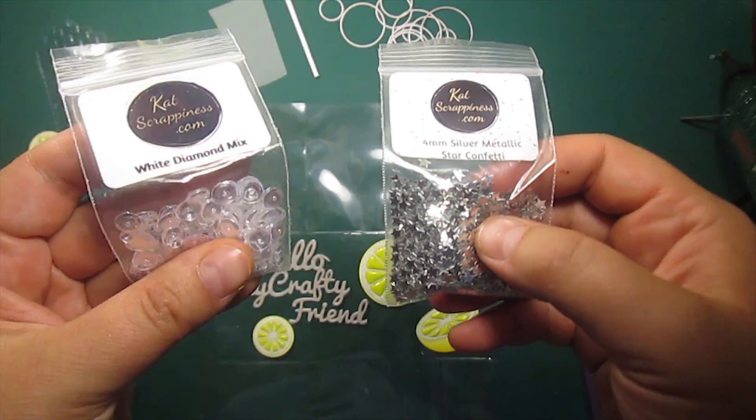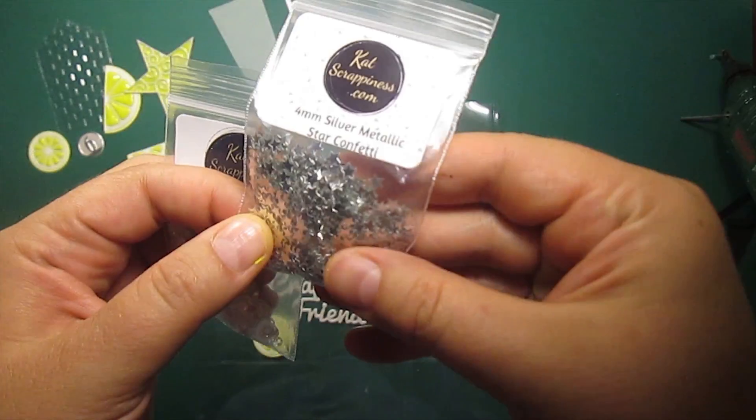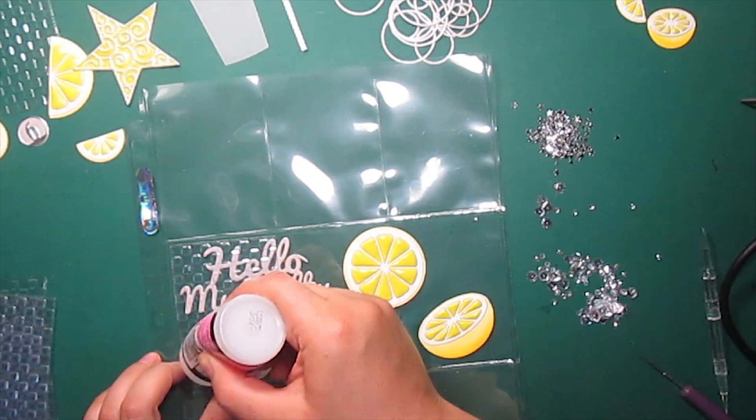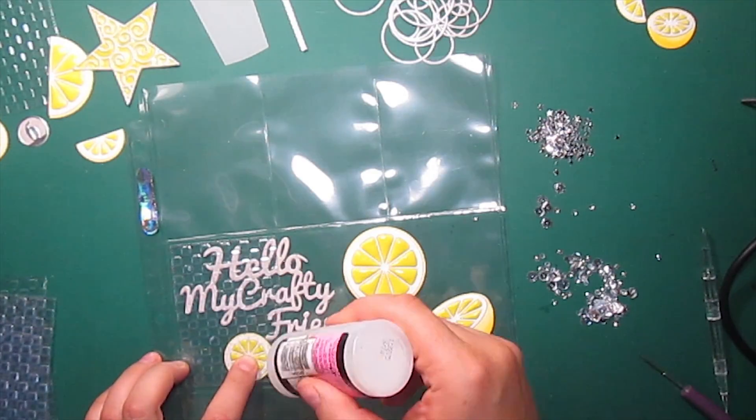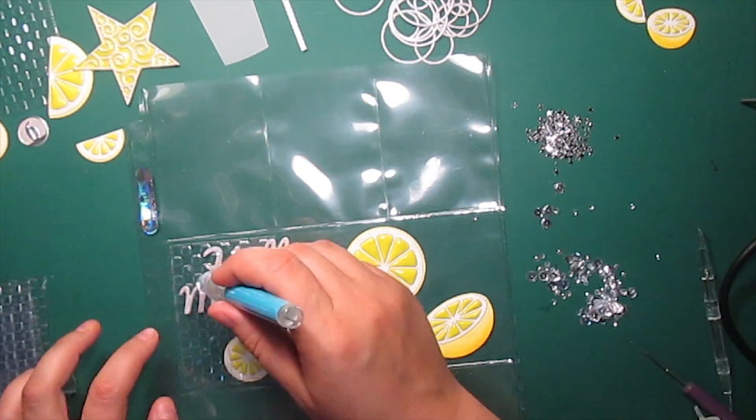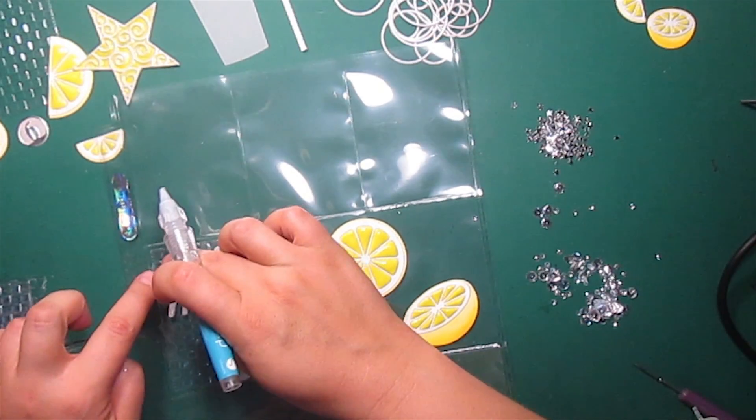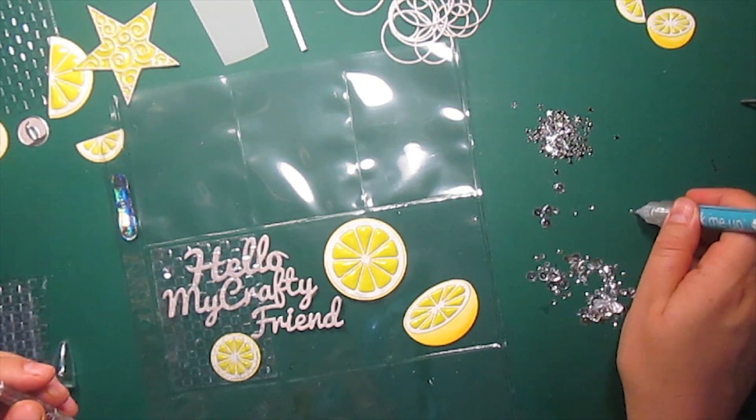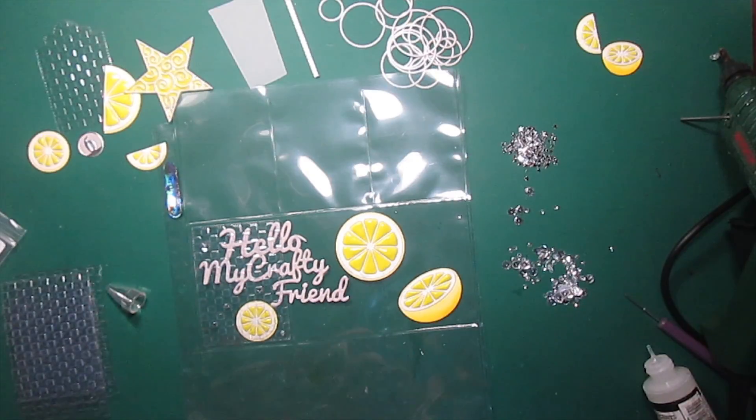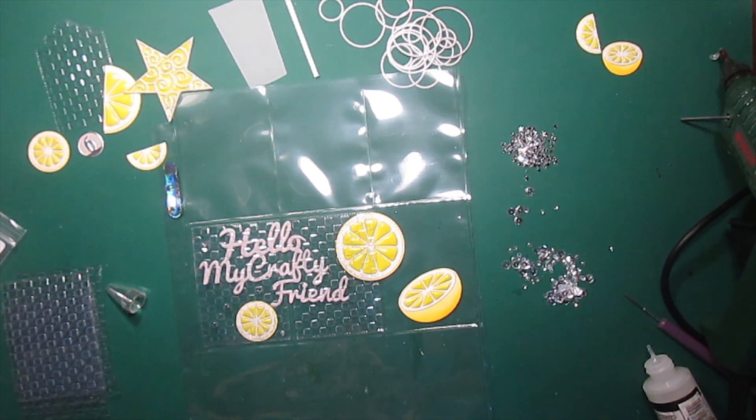To add sparkle and shine to my project I'll be using two sequin mixes by Cut Scrappiness. I'm positioning the panel on top of a page. This way I can see exactly where I have to adhere the sequins. You can use glossy accents or matte medium to stick them down. They both work just fine. I'll do that to all three central panels.